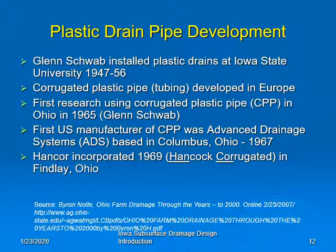Hancor Incorporated in 1969 is another major manufacturer of corrugated plastic pipe. Hancor was a division of Hancock Brick and Tile, which obviously made drainage tile prior to going into the corrugated plastic pipe business.